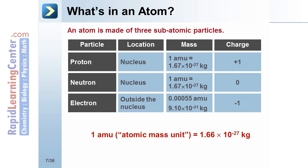One atomic mass unit is equal to 1.66 times 10 to the negative 27 kilograms.